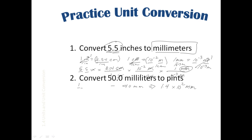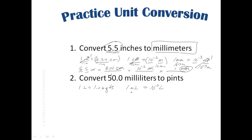The next problem is to convert 50 milliliters into pints. We need a relationship between milliliters and pints. I know that one liter is equal to 1.06 quarts, and that one milliliter is equal to 10 to the negative 3 liters — just like in the previous problem, milli means 10 to the negative 3 of the base unit. The last relationship needed is one quart equals two pints.